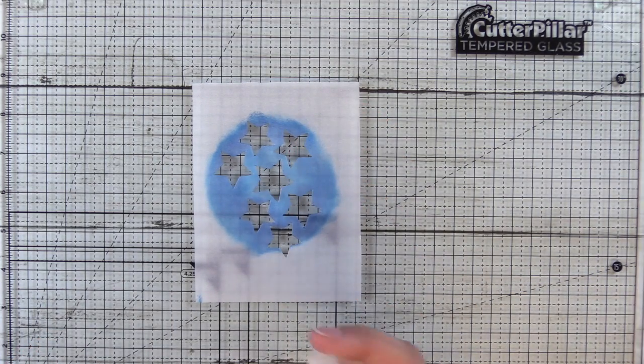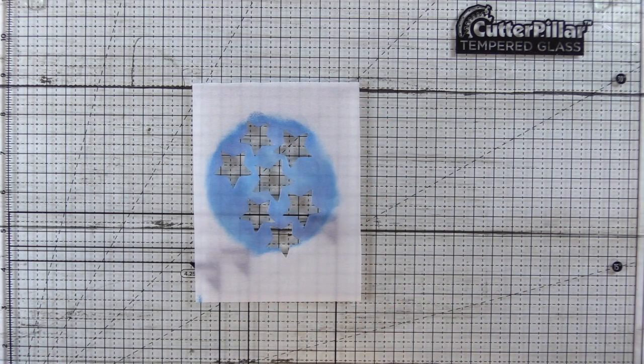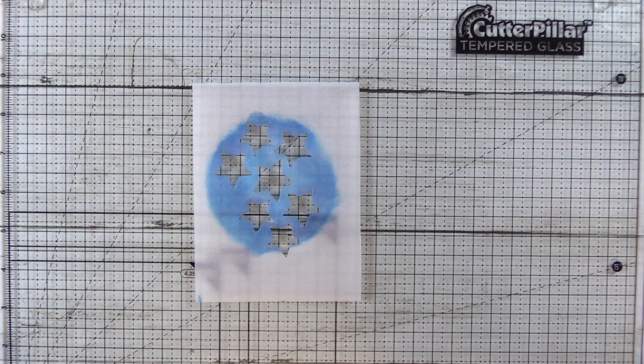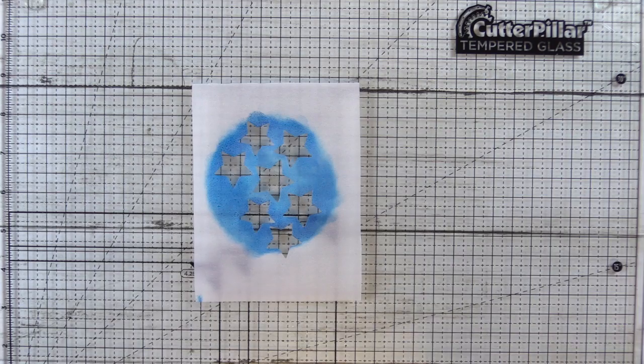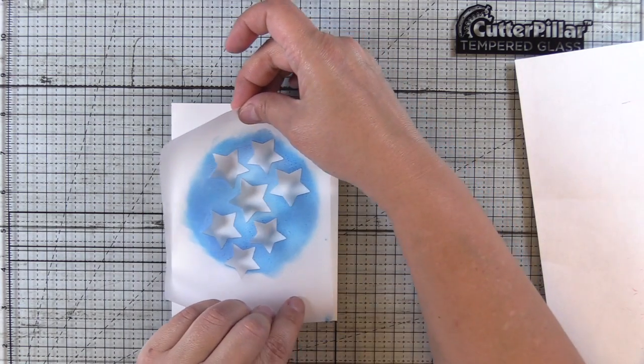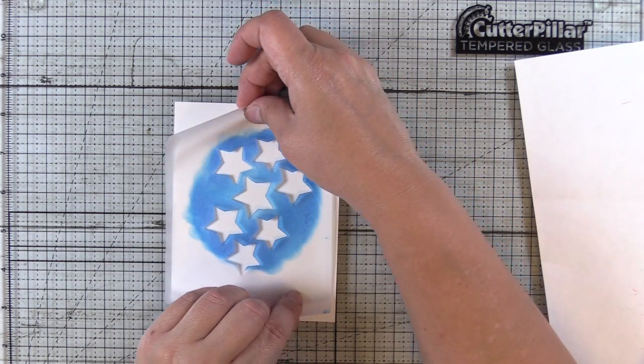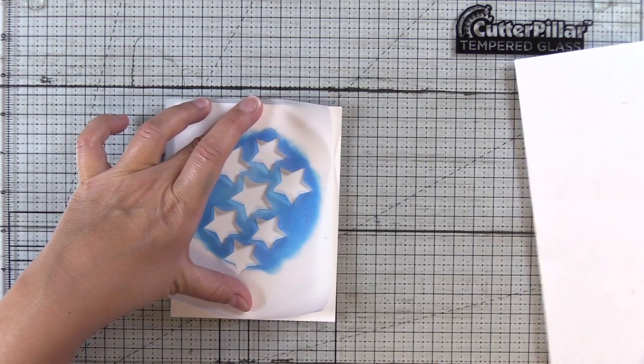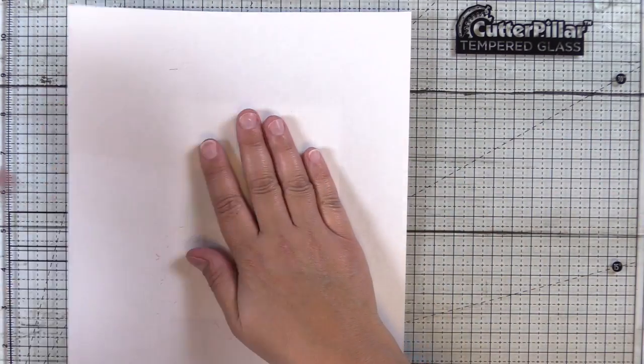Now this is our second technique or second element that we're going to create. I'm taking a mini mister and our vellum stencil with the ink side up and I'm spraying it three to four times to get a pretty even but light coverage of water, and then I'm going to press this down on a piece of cardstock. It can be a scrap piece.